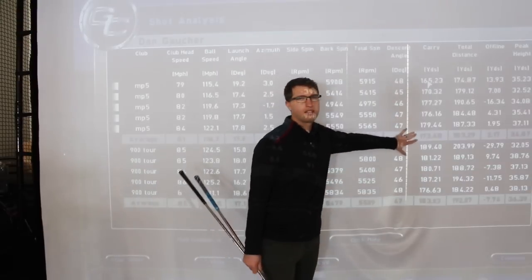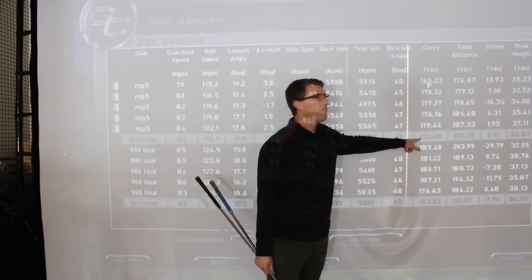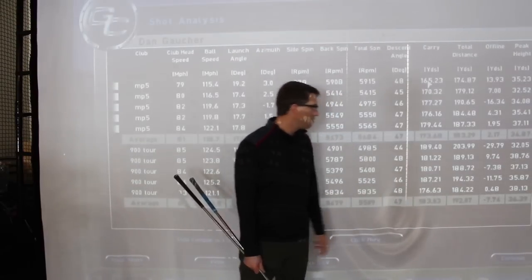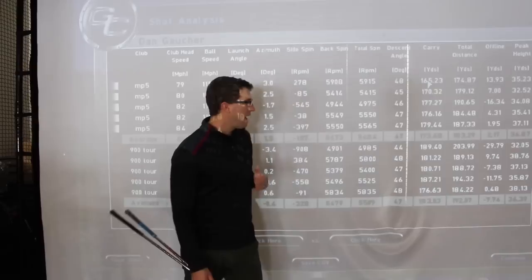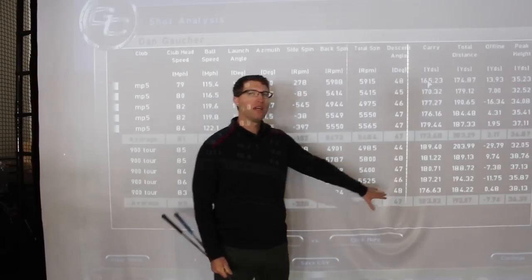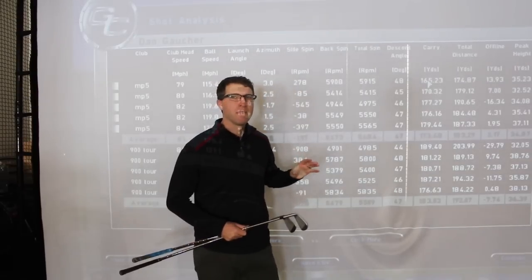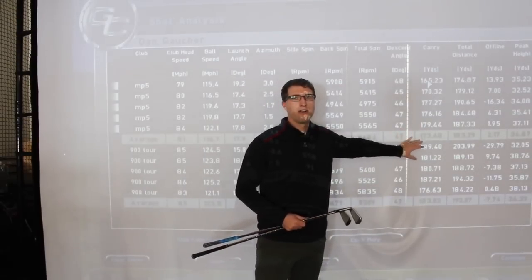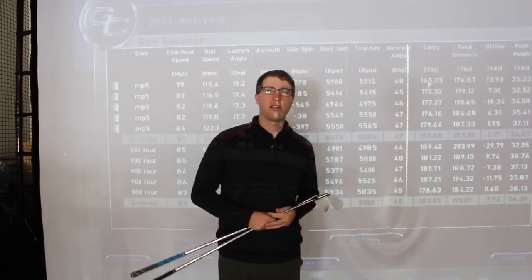And then obviously total carry distance here, so this is a big one. I averaged, we'll round up to 174 carry on the MP5s, and I averaged 183 with the JPX 900 tours. Now if I had to say when I go out onto a golf course, the 6 iron is probably close to that 183 carry for myself, so that's right around where I would probably expect to see it. Now the question becomes why was the carry distance a little bit different, almost 9 yards difference.